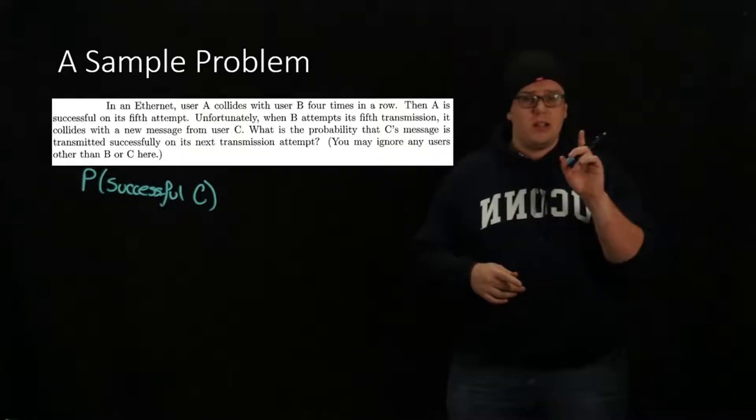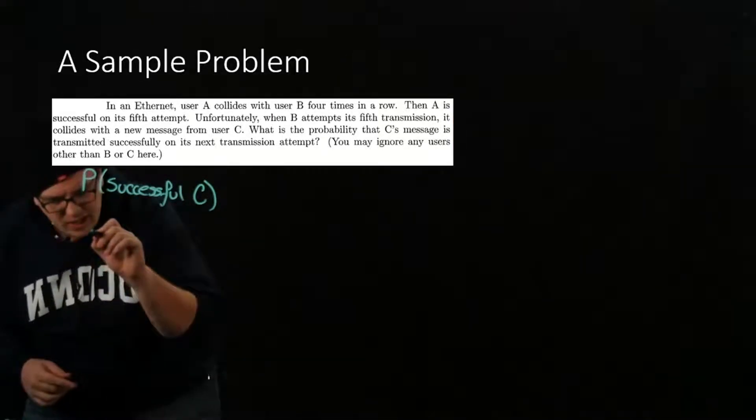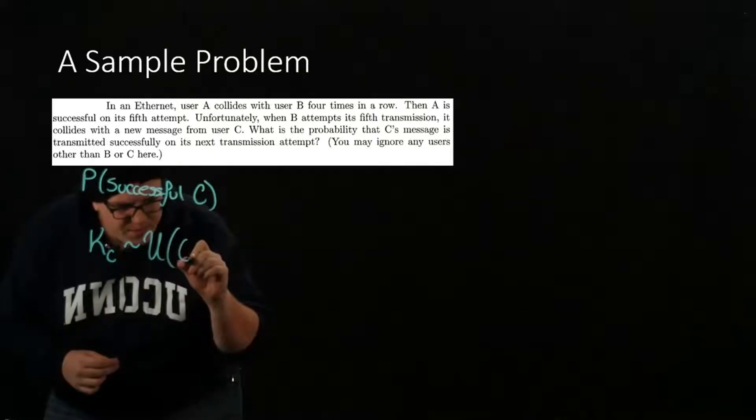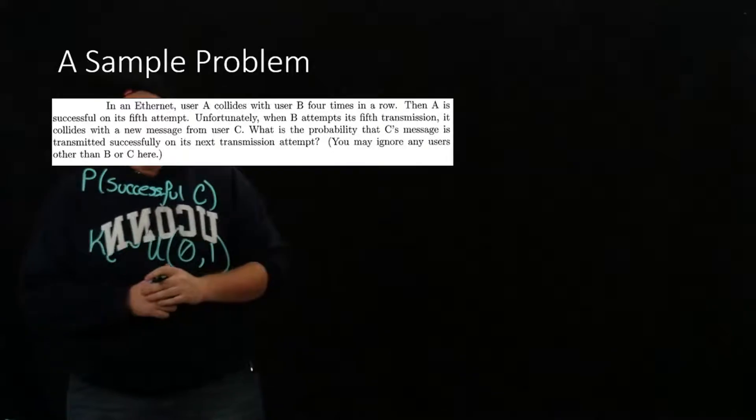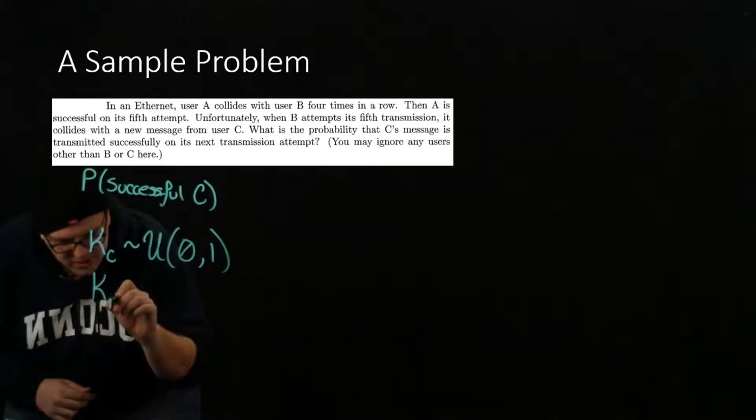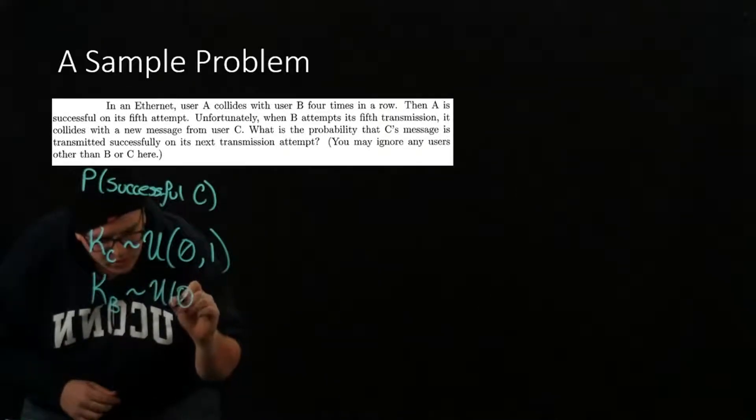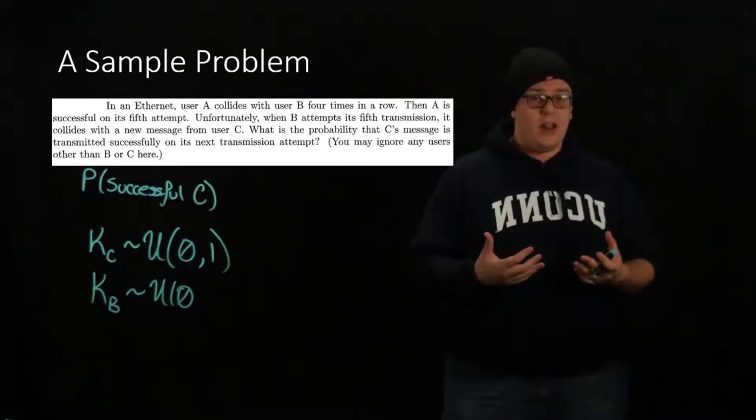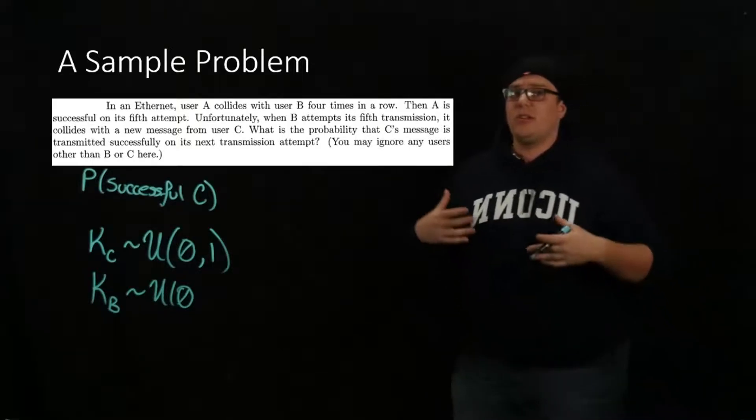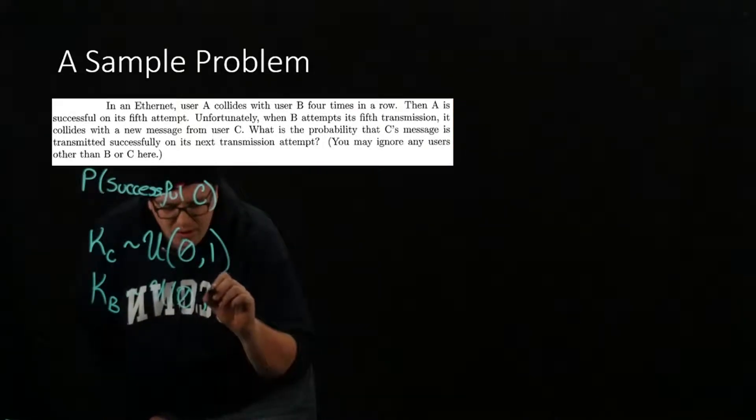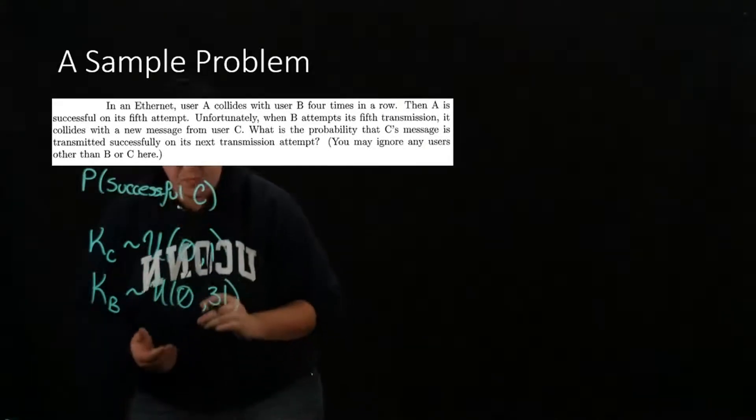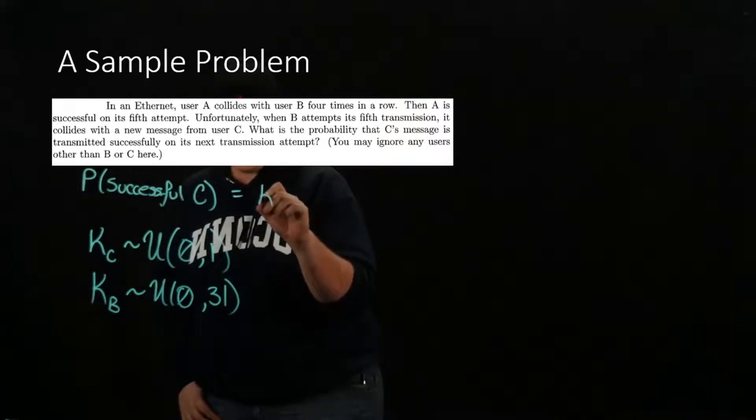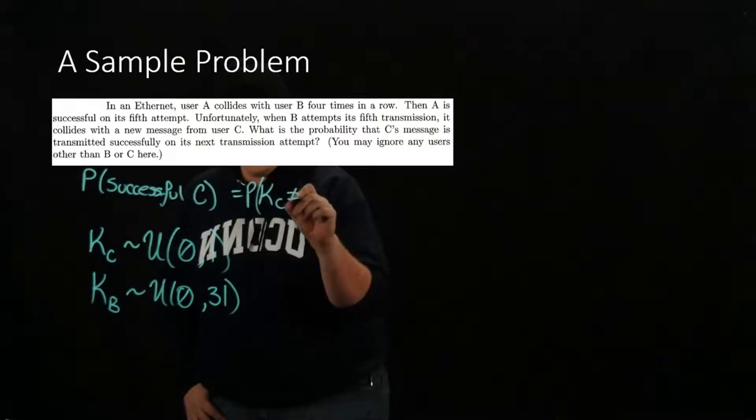User C has experienced one collision, so that means that the delay K that C is going to wait, we'll call that K sub C, is distributed uniformly between 0 and 1. And the delay that B is going to have is distributed uniformly between 0 and, because this is the fifth time that B is trying to send something, 2 to the 5 minus 1. 2 to the 5 is 32, so it can be distributed uniformly between 0 and 31.